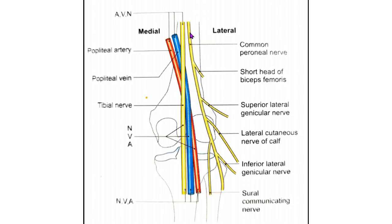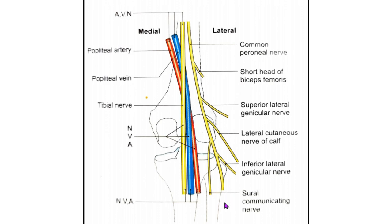The common peroneal nerve is the smaller terminal branch of the sciatic nerve, with a root value of dorsal divisions of ventral rami L4, L5, S1 and S2. It extends from the superior angle of the fossa to the lateral angle along the medial border of the biceps femoris muscle. Continuing downwards and forwards, it winds around the posterolateral aspect of the neck of the fibula and pierces the peroneus longus muscle, dividing into superficial and deep peroneal nerves.